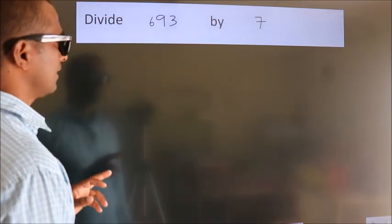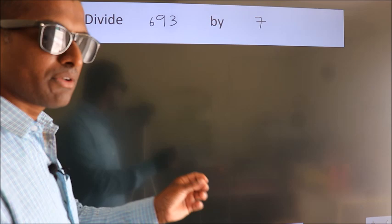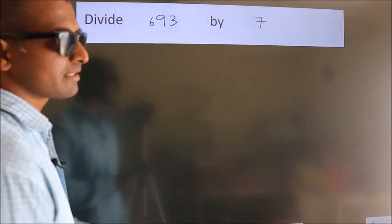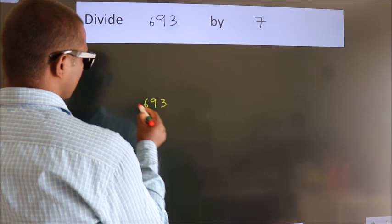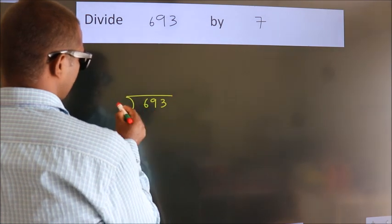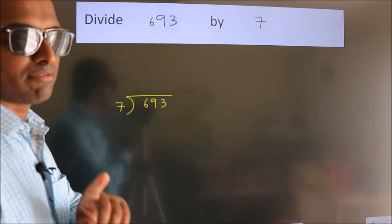Divide 693 by 7. To do this division, we should frame it in this way: 693 here, 7 here. This is your step 1.